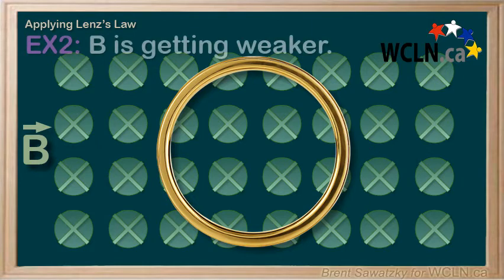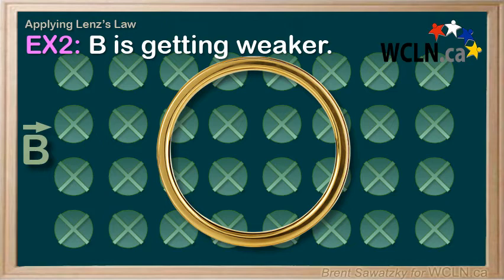Let's do one more. This time the magnetic field is getting weaker — still into the page, but getting smaller in magnitude. So to oppose this change in flux, we need to resist the change again. And so if it's going in and getting weaker, to resist would mean that our induced magnetic field must be going inwards through the loop as well.